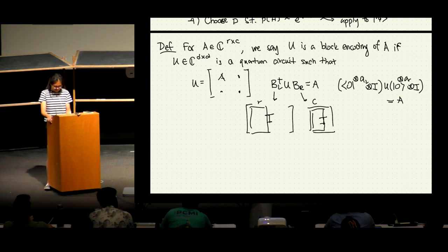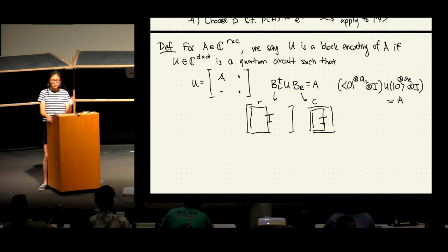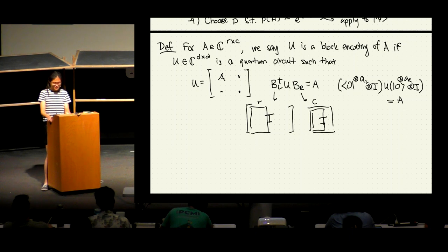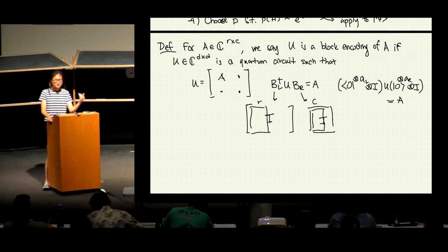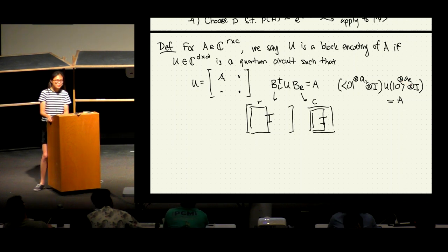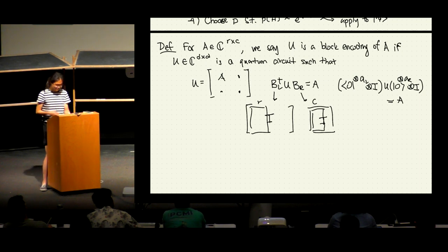Operationally, you have a quantum state ψ of the appropriate dimension. You attach ancilla qubits, apply U, then measure and post-select on the measurement being all zeros. So you add A_R many qubits, measure A_L qubits, and if the outcome is all zeros, you have effectively applied A. That's how you should think about it.